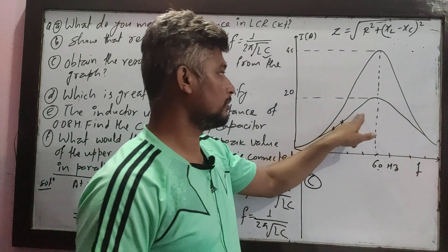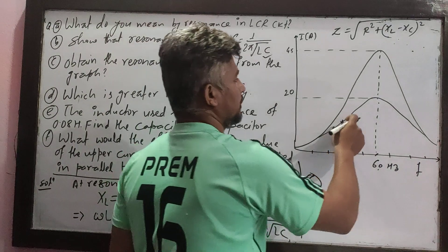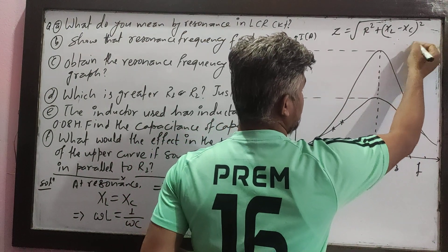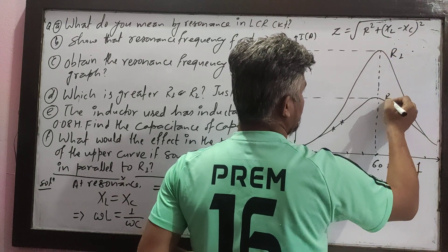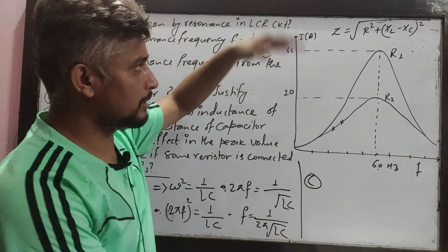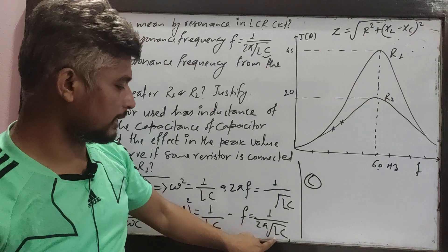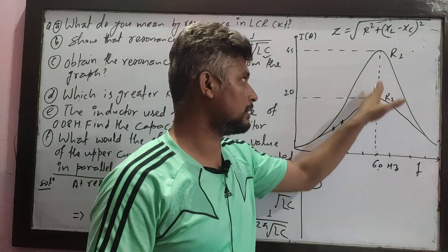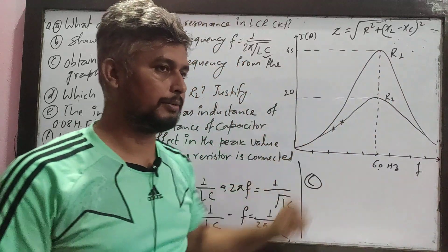The peak current value is maximum. For the same values of L and C, but different values of R — R1 and R2 — the resonance frequency is the same, but the height of the peak is different.